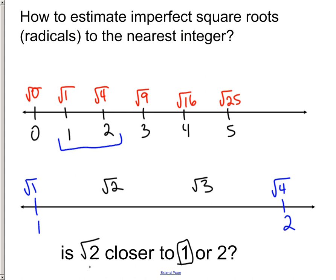Now, if I change that and I said, hey, what about the radical 3? Is radical 3 closer to 1 or 2? We'd see that radical 3 is absolutely closer to the number 2 on the number line.